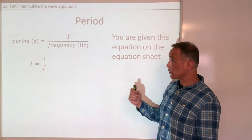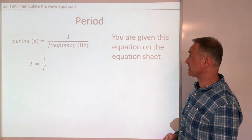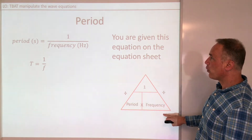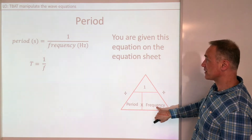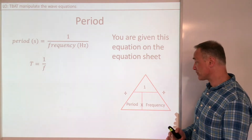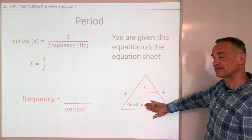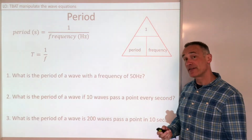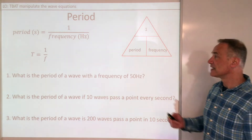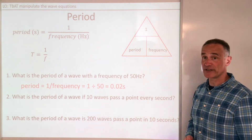In your exam you get the equation 'period is 1 over frequency' on the equation sheet. If you want to rearrange it, put it in the triangle — 1 goes at the top, frequency at the bottom, because it's 1 divided by frequency. Pause the video and have a go at these three questions. The first one: period is 1 over frequency, so that's 0.2 seconds.